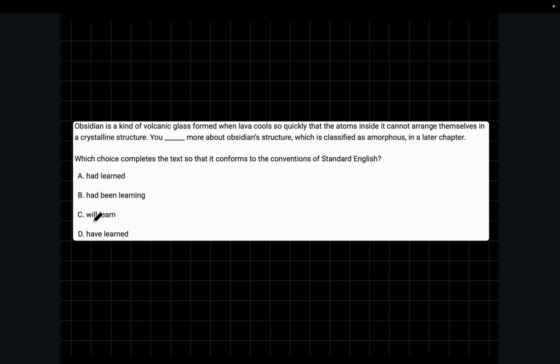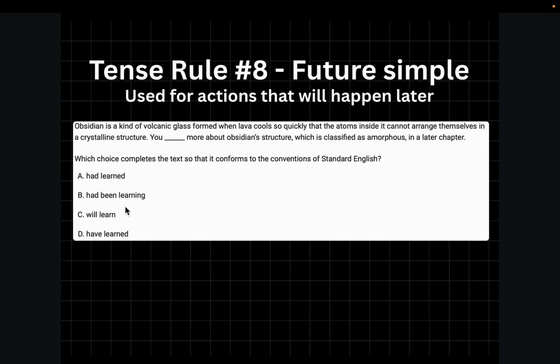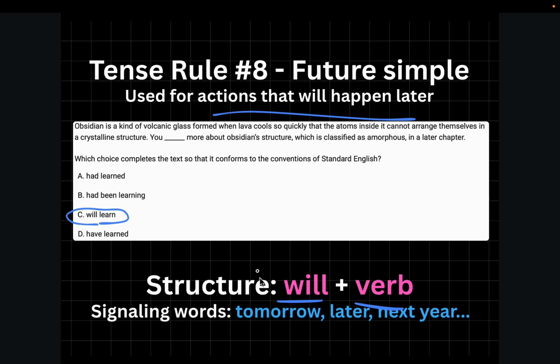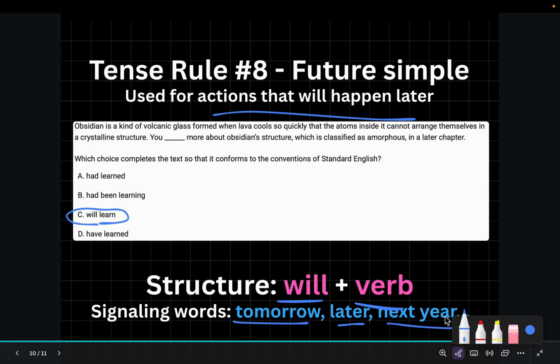Moving on to the last question. However, stick around till the end where I'll show you the framework I used to easily keep track of which tense rule I should use. So this question is pretty easy. Let's take a look at it. It says obsidian is a kind of volcanic glass formed when lava cools so quickly that the atoms inside it cannot arrange themselves in a crystalline structure. You'll blank more about the obsidian structure, which is classified as amorphous in a later chapter. We can see that we will learn about this later on, so in the future. And whenever we have something that will happen in the future, we use tense rule number eight, which is future simple. Future simple is used for actions that will happen later on. And the structure is pretty easy. Will plus verb. So in this case, choice C. Sometimes you'll see some signaling words such as tomorrow, later, or next year. So in this case, it says later.